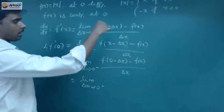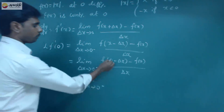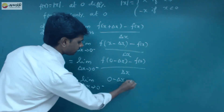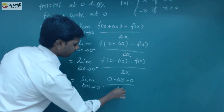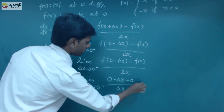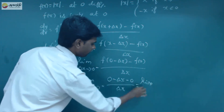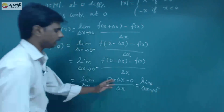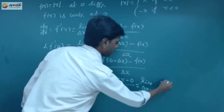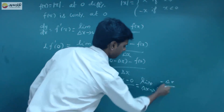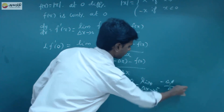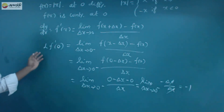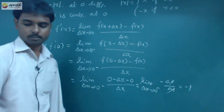For the left-hand side, since f(x) = −x near 0 from the left, we get: limit as Δx → 0⁻ of [0 − Δx − 0] / Δx = limit of (−Δx / Δx) = −1. So the left-hand side limit is −1.